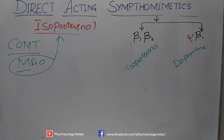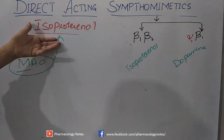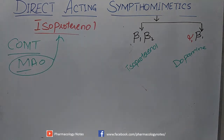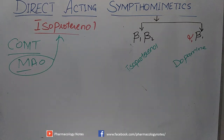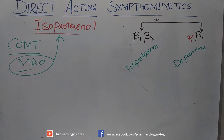To summarize: sympathomimetic drugs, specifically direct-acting, non-selective Beta agonists with affinity for both Beta-1 and Beta-2 receptors — that drug is isoproterenol. It is not used clinically now except in emergency situations when we need to stimulate the heart. Its one primary purpose is to stimulate the heart by increasing heart rate and stroke volume, thereby increasing cardiac output.